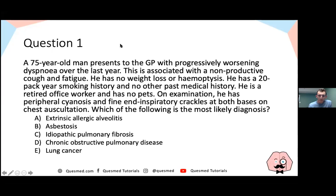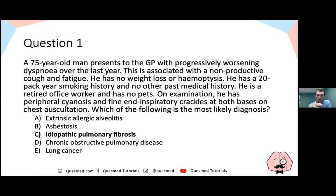The answer is idiopathic pulmonary fibrosis — a typical presentation. Extrinsic allergic alveolitis is another type of interstitial lung disease that usually requires exposure to pets, birds, farms, or moulds. Asbestosis requires asbestos exposure — the history usually mentions construction or shipyard work. COPD doesn't usually present with fine end-inspiratory crackles, and lung cancer would typically present with haemoptysis and weight loss, which this patient doesn't have.